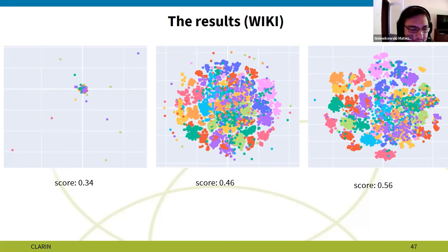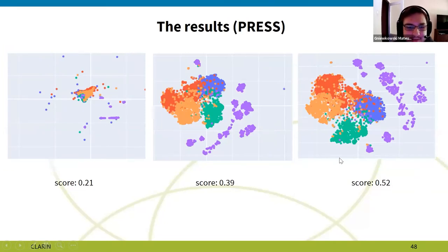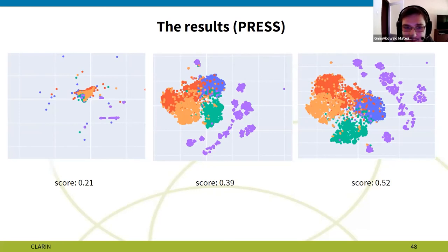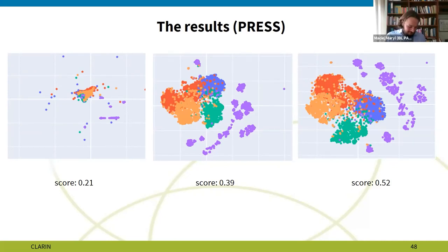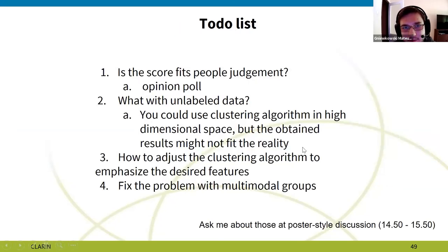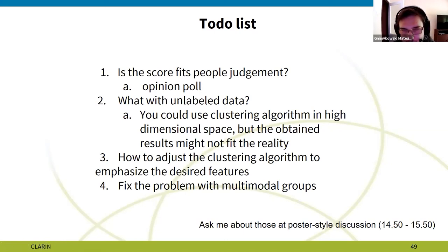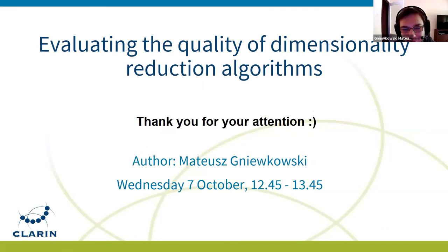The next dataset shows that the violet group is actually divided into several subgroups, and this means it doesn't always work perfectly, but in this example it works quite well. There are still problems to face in this work, but I think this is a good starting point for discussion in the poster session. Thank you for your attention and for having me.